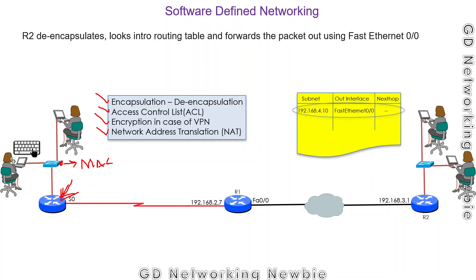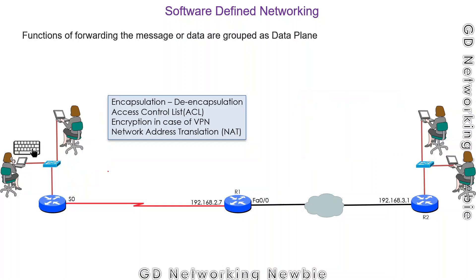All these functions performed by networking devices when forwarding data packets are classified as data plane functions. They are all grouped together as the data plane because they are directly involved in forwarding the message or data.